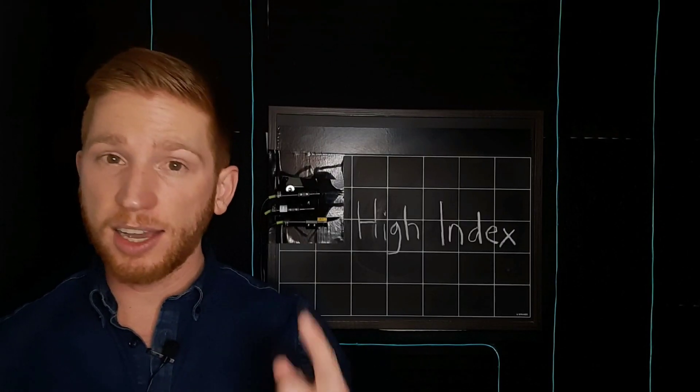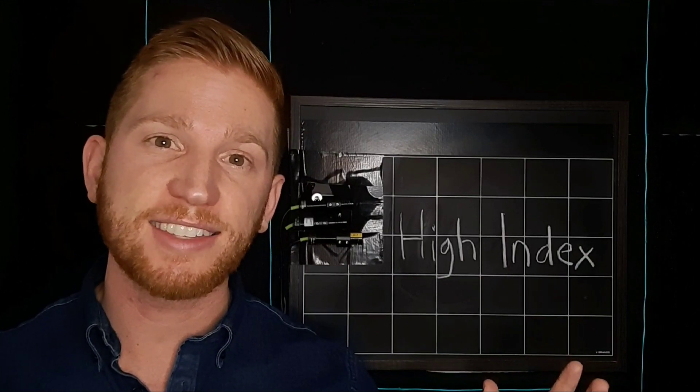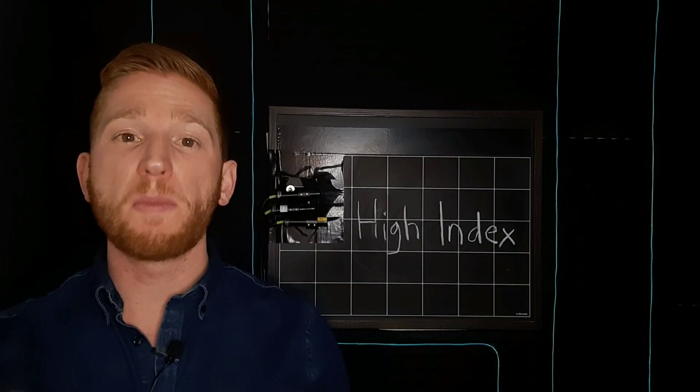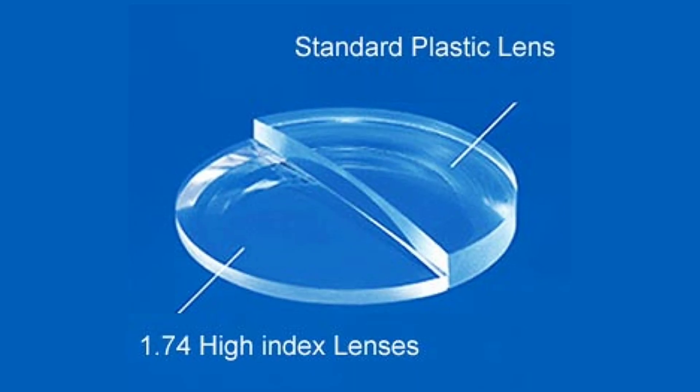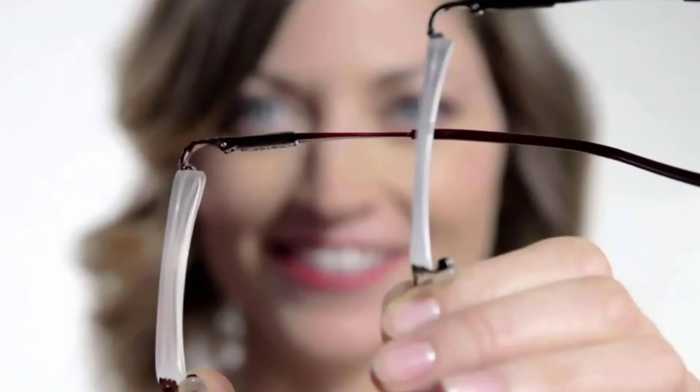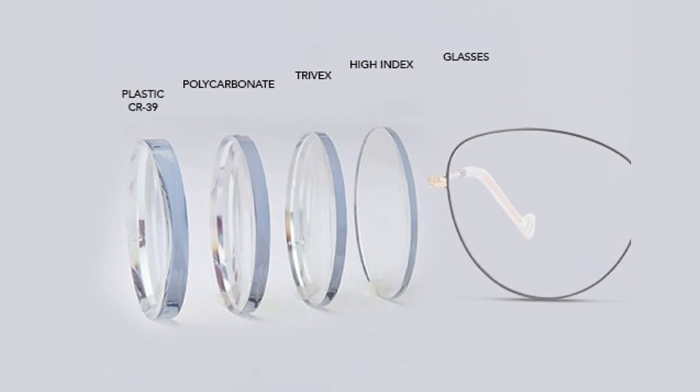High index materials have a higher refractive index, probably could have guessed that, and that allows them to bend light more, making them thinner and lighter, and good for people with those really high prescriptions.